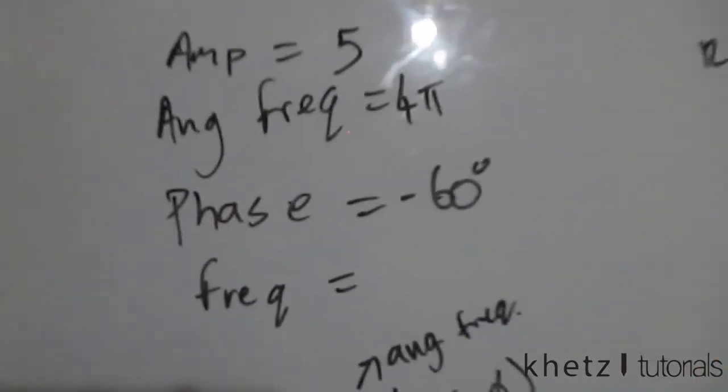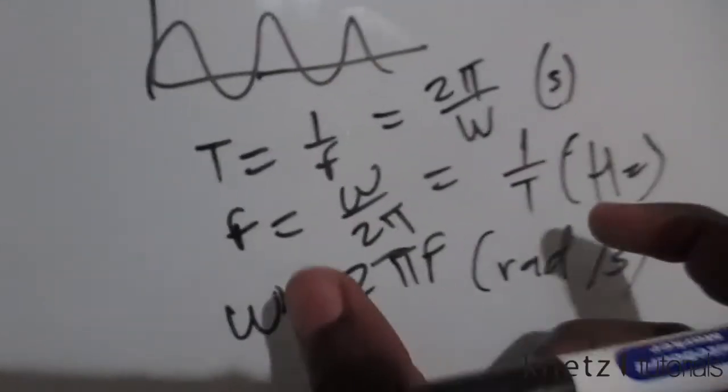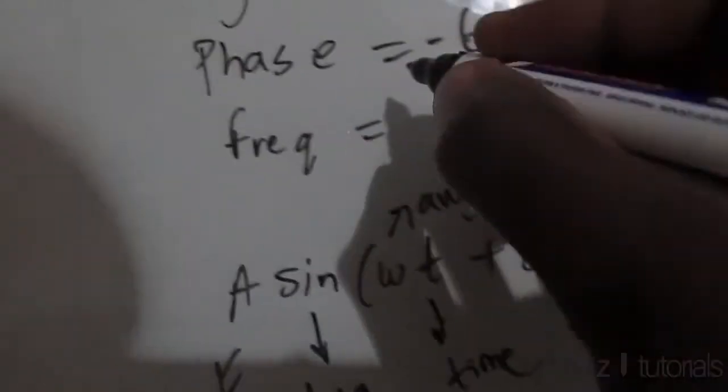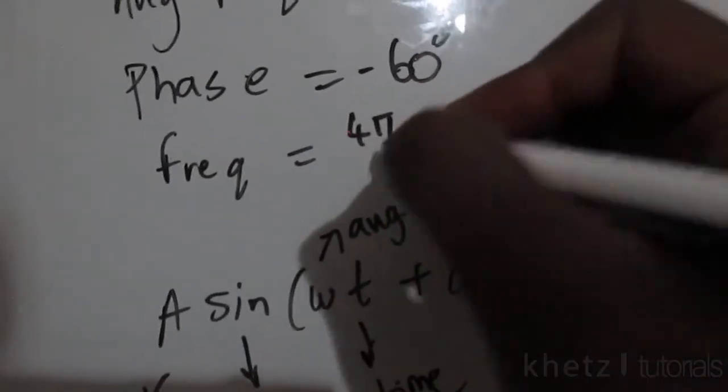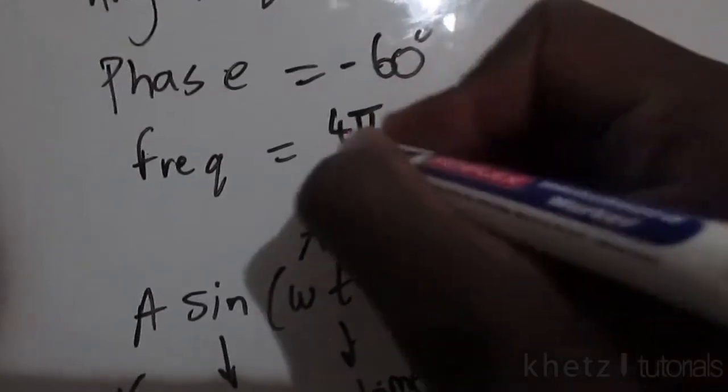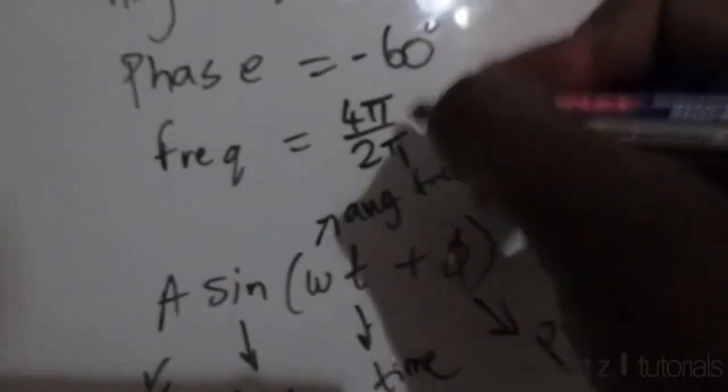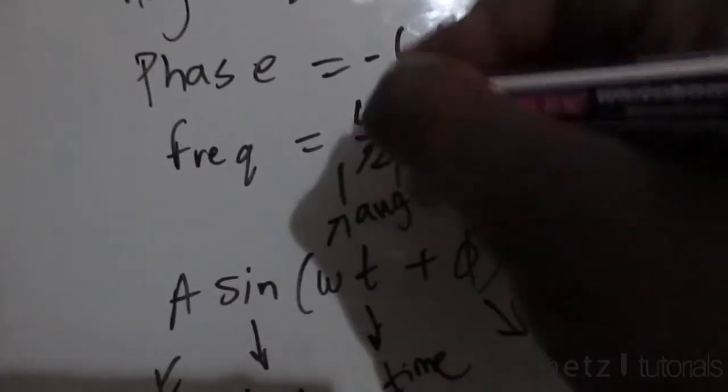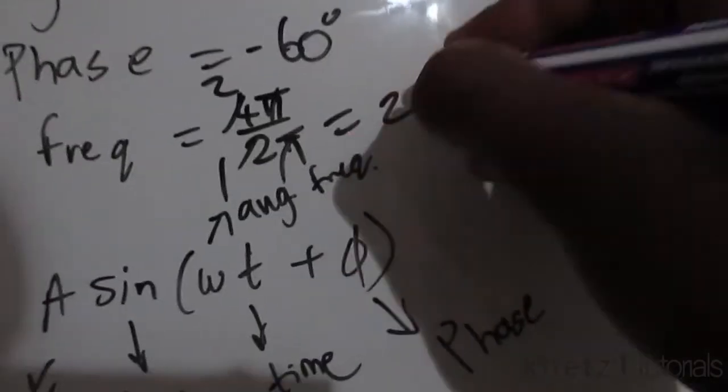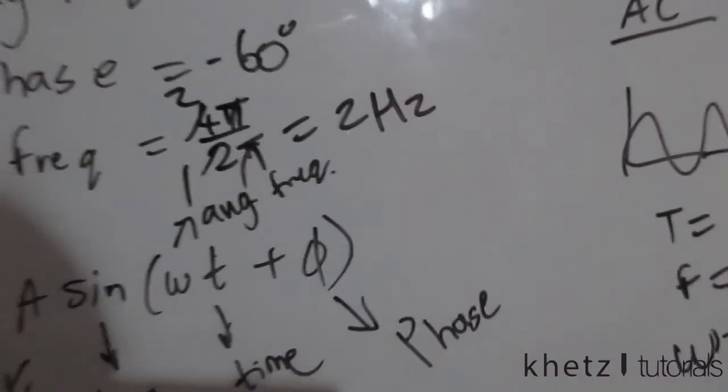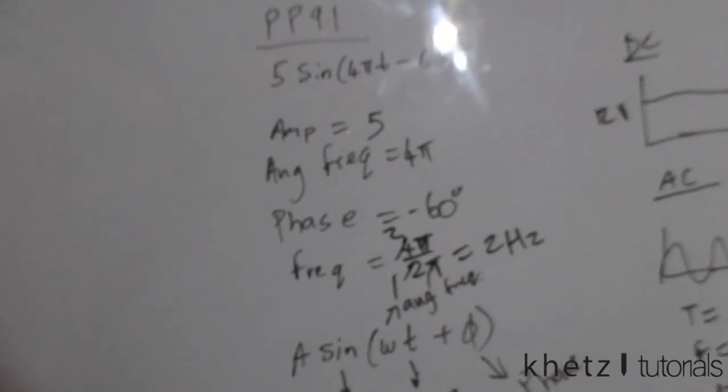Now coming back to your question, we also find the frequency, so we apply this formula. We are going to say 4π, which is our angular frequency, divided by 2π using this formula, and we're going to get our frequency in hertz. So this cancels out and that goes twice in there, and therefore our frequency is 2 hertz. And that is how you answer this problem.